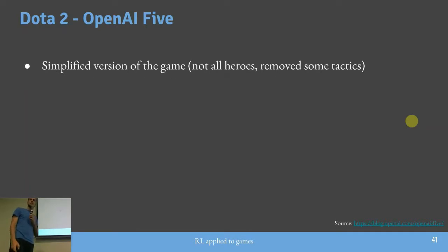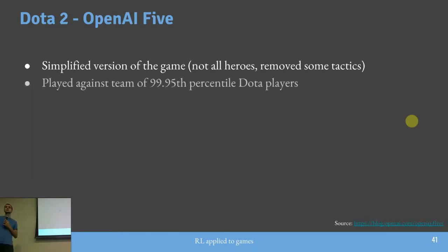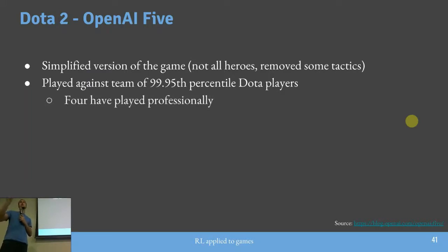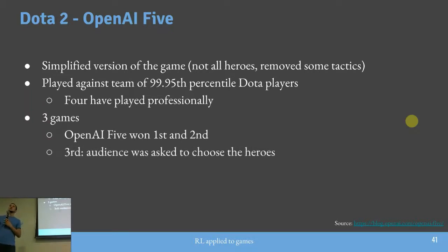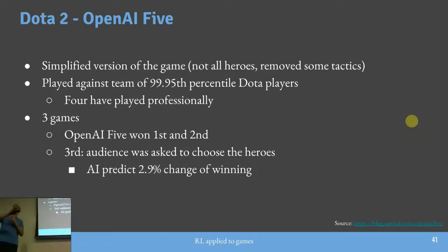Para ser justo: eles removeram várias complexidades do jogo — alguns spells, vários heróis. Jogaram contra quatro ex-profissionais de Dota. Dos três jogos, a IA ganhou os dois primeiros. No terceiro, a plateia escolheu os heróis da IA — a pior combinação possível. A IA fazia predições de vitória: nos dois primeiros jogos, 80 e 90 e poucos por cento de confiança. Nesse último ficou em 2% — chegou a crescer para 17, 18%, mas no fim perderam.